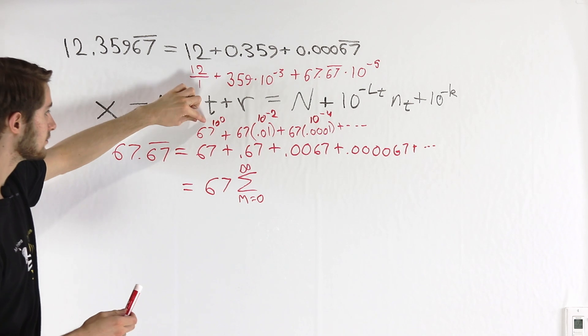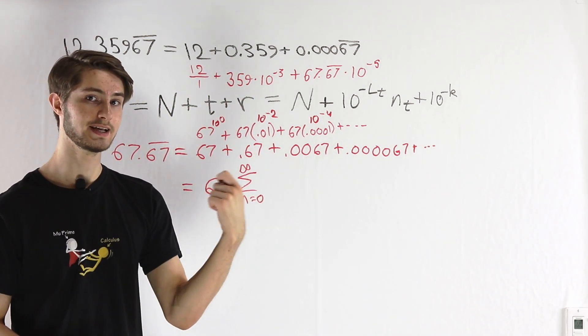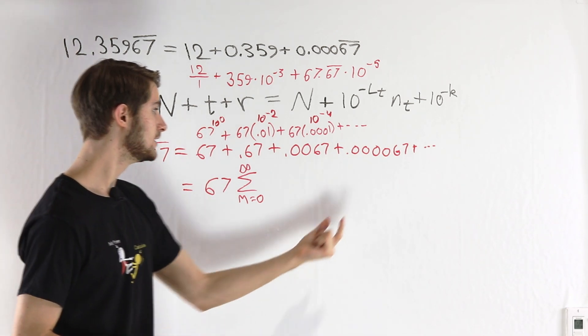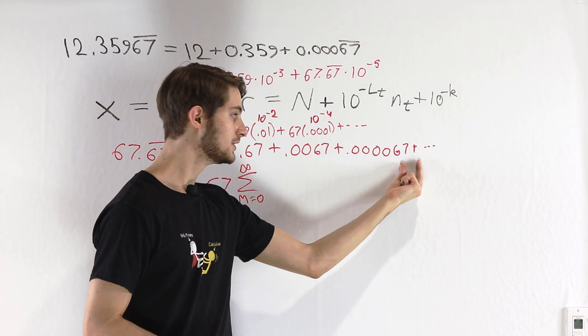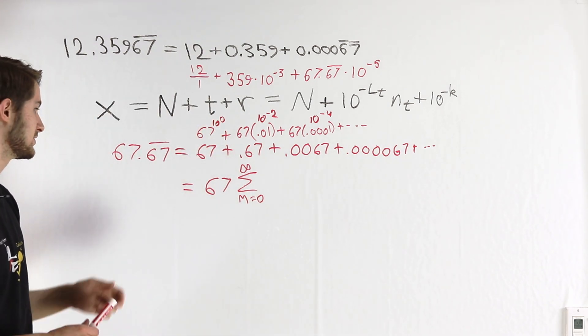So each time we go from one term to the next, we're going to multiply by 10 to the negative 2. And that makes sense because multiplying by 10 to the negative 2 means we shift the decimal two places over. So we get our repeating decimal expansion.